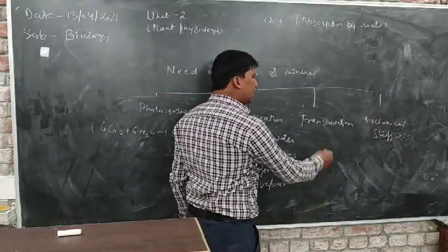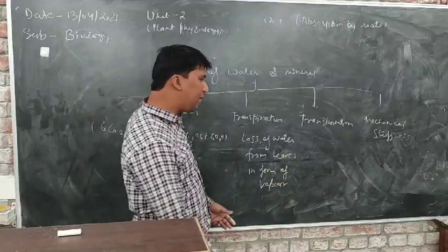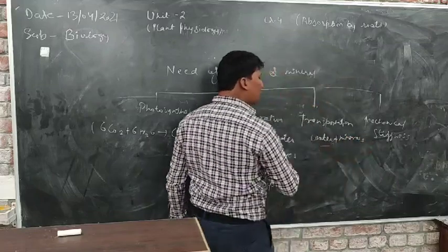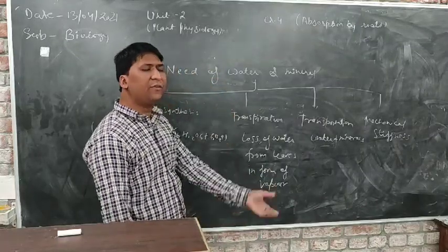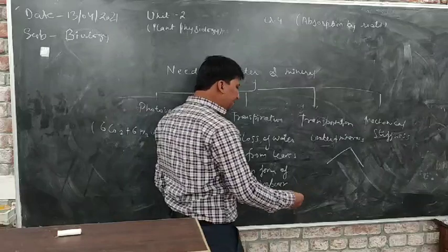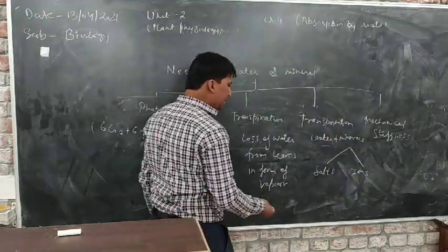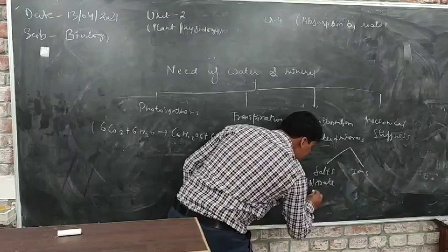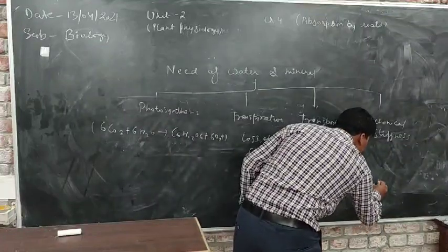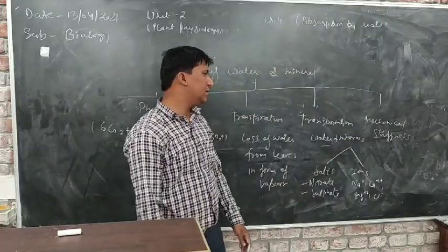Third is transportation — the movement of particles from one place to another. When we talk about particles, it includes water molecules as well as minerals. That means the movement of water from one region to another, as well as the movement of food from one region to another. Minerals are generally present in two forms in plants: either in the form of salts such as nitrate and sulfate, or in the form of ions such as sodium ion, calcium ion, magnesium ion, and tulin ions.